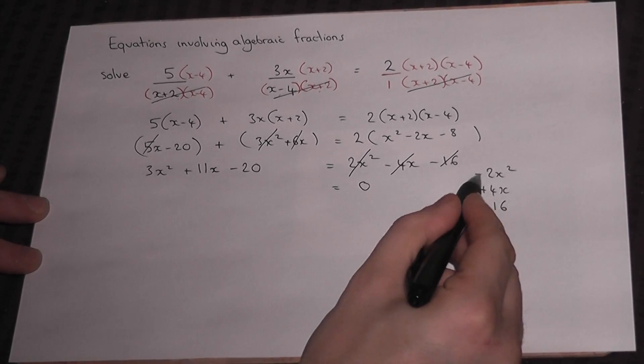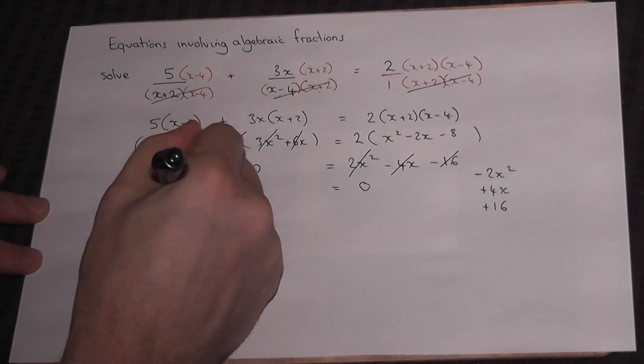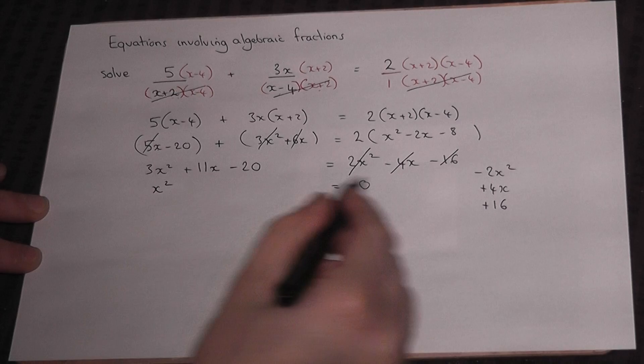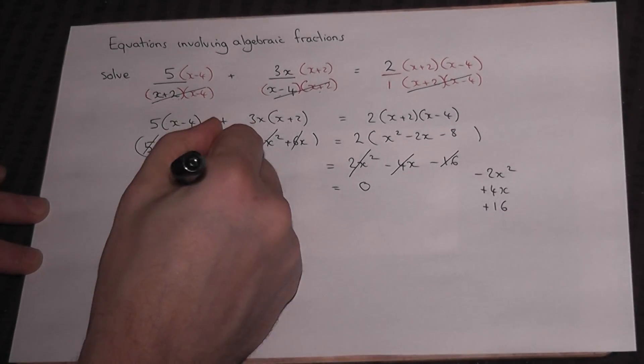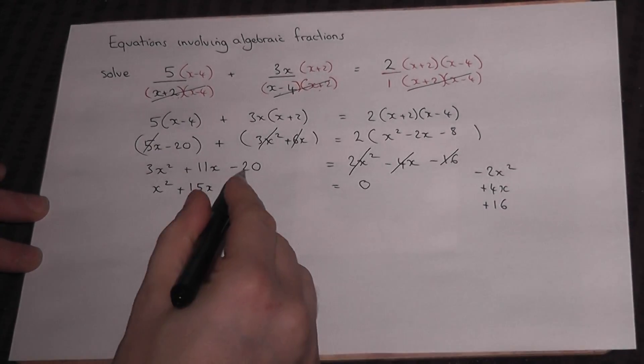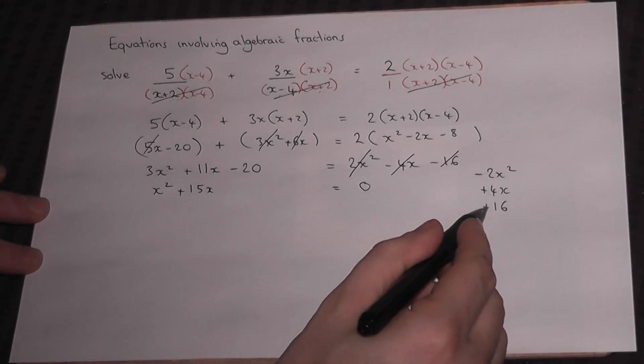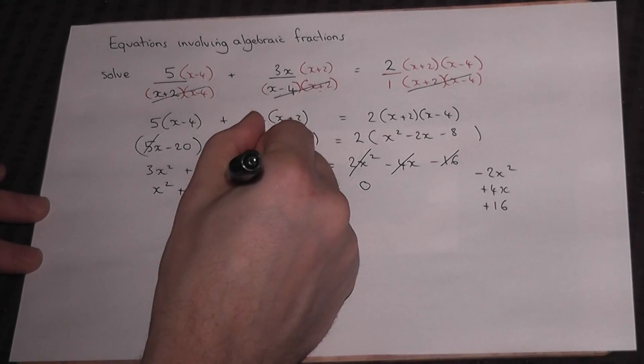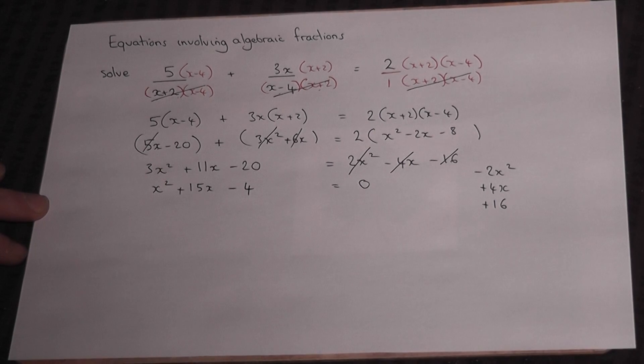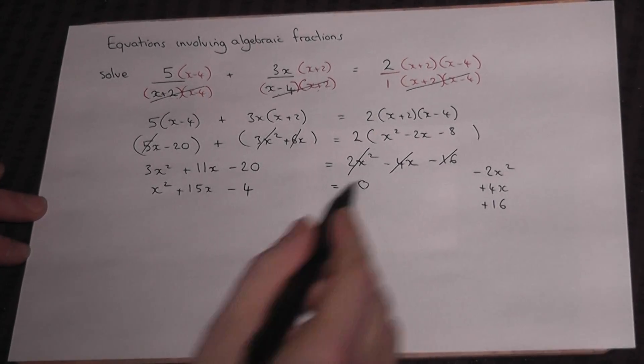That leaves that side equal to 0, but I must do the same to the other side. So 3x squared take away 2x squared is x squared, 11x plus 4x is 15x, and minus 20 plus 16 is minus 4. So we have an equation equal to 0.